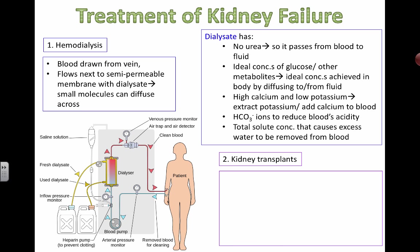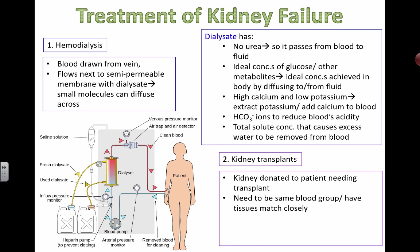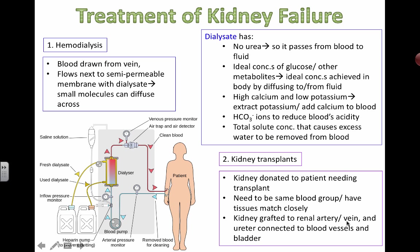If all else fails, or while on a waiting list, you can try to get a kidney transplant. You need to find a matching blood group so your tissues match closely and your body doesn't reject the donated kidney. The kidney is grafted to the renal artery and vein so everything is connected properly, and the ureter is connected so the kidney's output can empty into the bladder for urination.